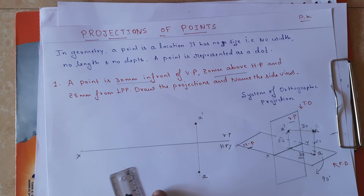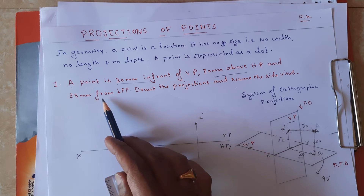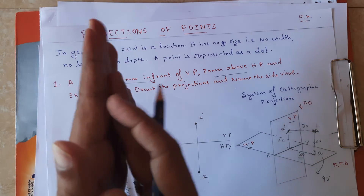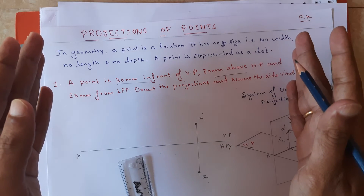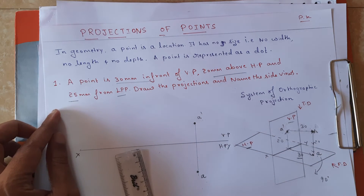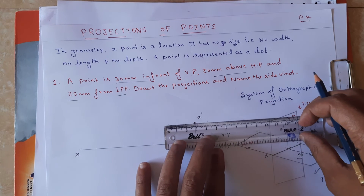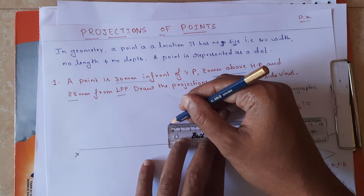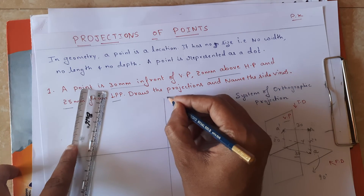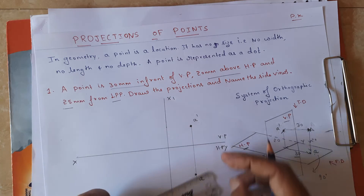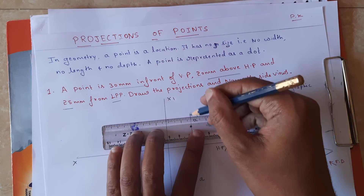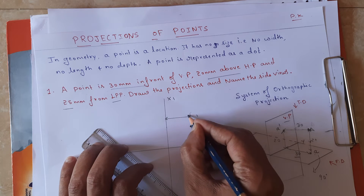Next, there is another data given — 25 mm from the left profile plane. Left profile plane means it will be on the left side; right hand side will be the right profile plane. So the left profile plane is given — the distance is 25 mm. From a dash, mark 25 mm and draw a projection line — this is another reference line, that is X1Y1. The distance from this left profile plane to the XY line is 20 mm.